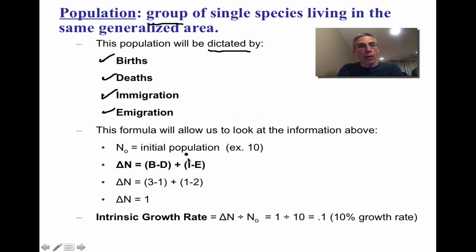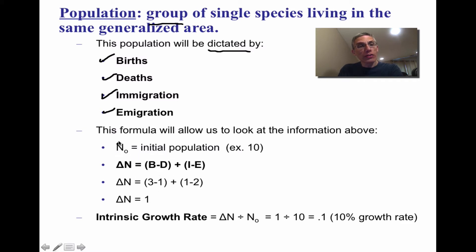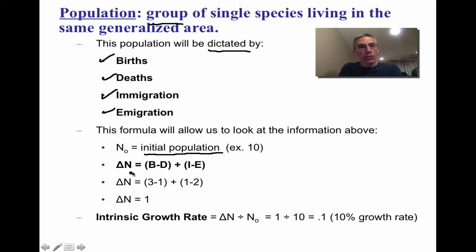A mathematical formula gives us information about the growth rate of a population. N sub-zero indicates the initial population size. To find the change in population over time, we look at those four factors: birth rate, death rate, immigration, and emigration.